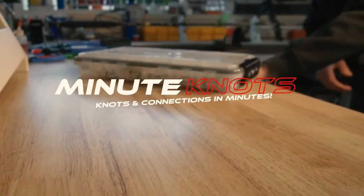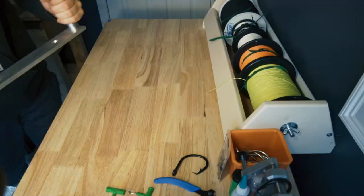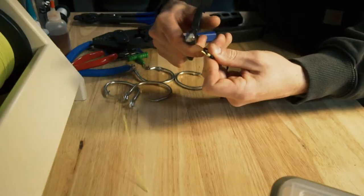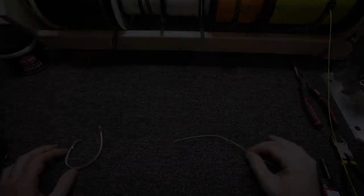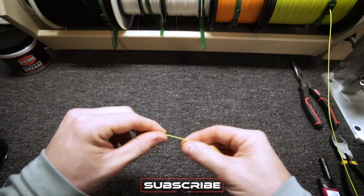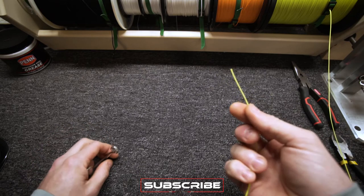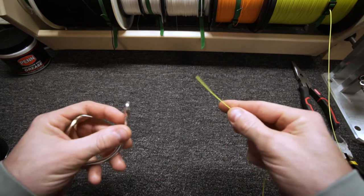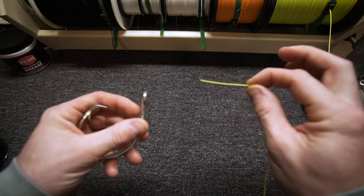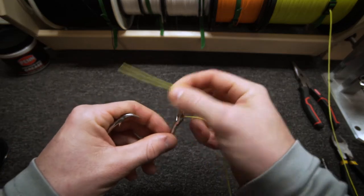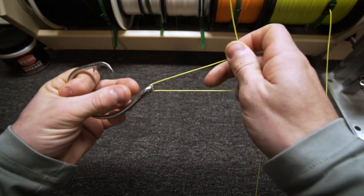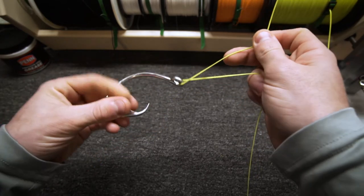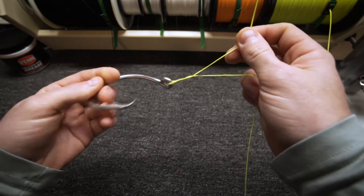I'm using braid for this example just because it's easier to see with this neon. You're going to take your tag and go through whatever you're connecting. From there you are going to twist your tag end around your main line, whether you twist the hook which makes it easy, or you just twist it around.